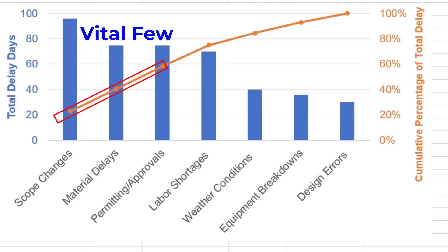Based on our example, the project manager should immediately prioritize these vital few. To mitigate project delays from scope changes, implement a robust change management process with clear approval protocols and impact assessments. Maintain continuous stakeholder communication to align expectations and identify potential scope shifts early. Use agile planning techniques to adapt schedules efficiently, while ensuring resource flexibility and risk contingencies are in place. To mitigate project time overruns from material delays, establish strong supplier relationships and diversify sources to reduce dependency on single vendors. Implement just-in-time delivery with buffer stocks for critical materials and use real-time tracking systems for improved supply chain visibility.